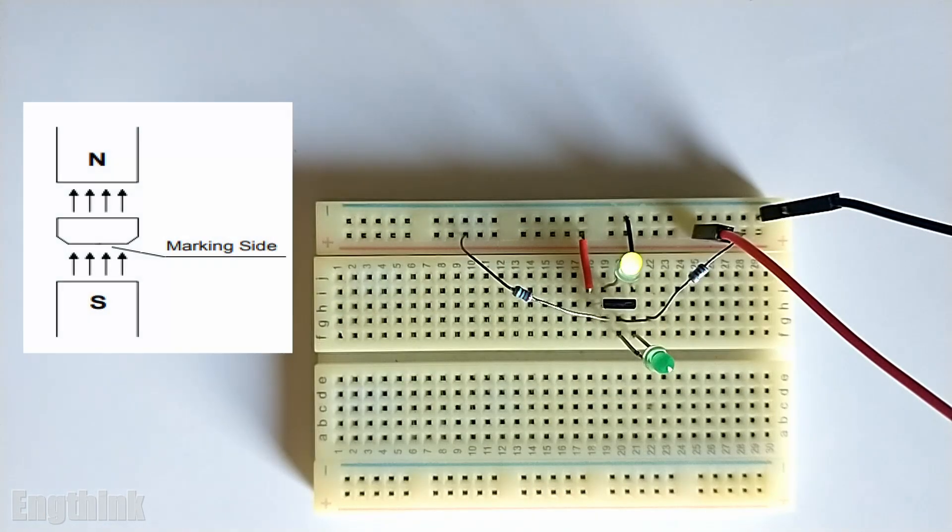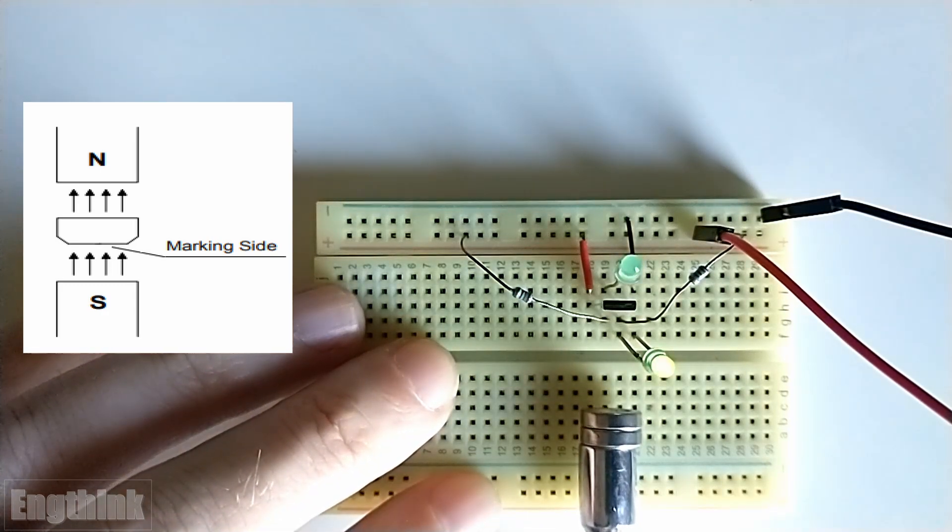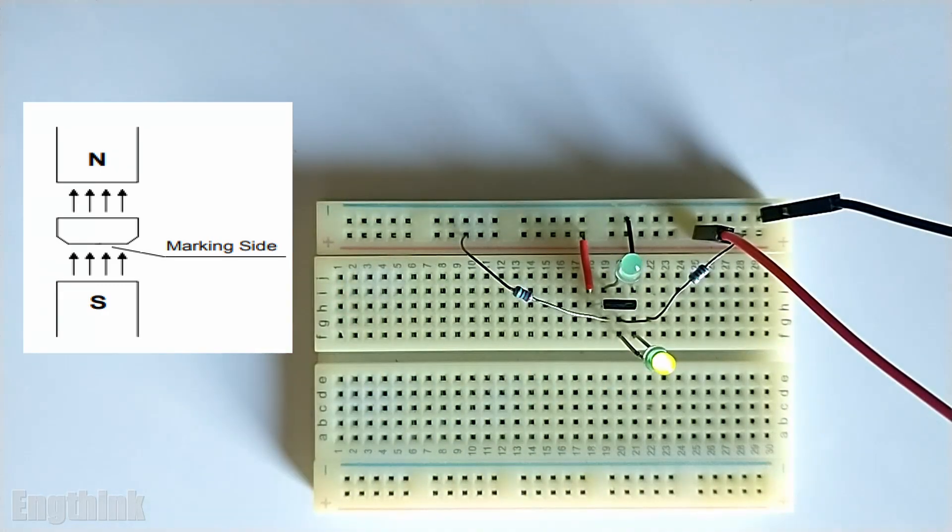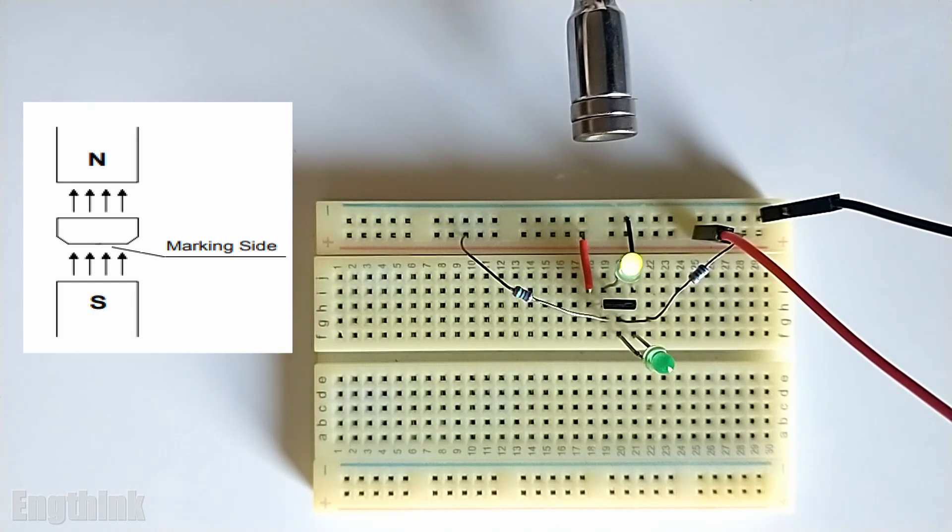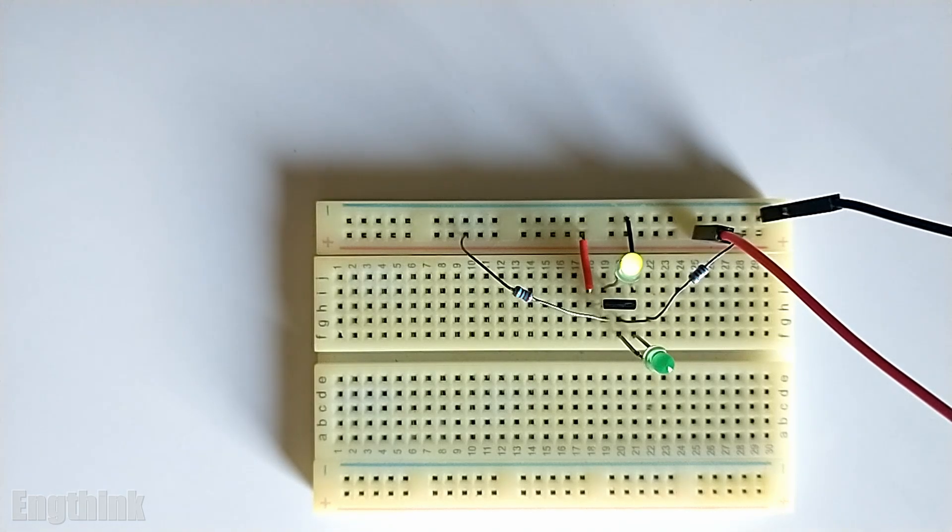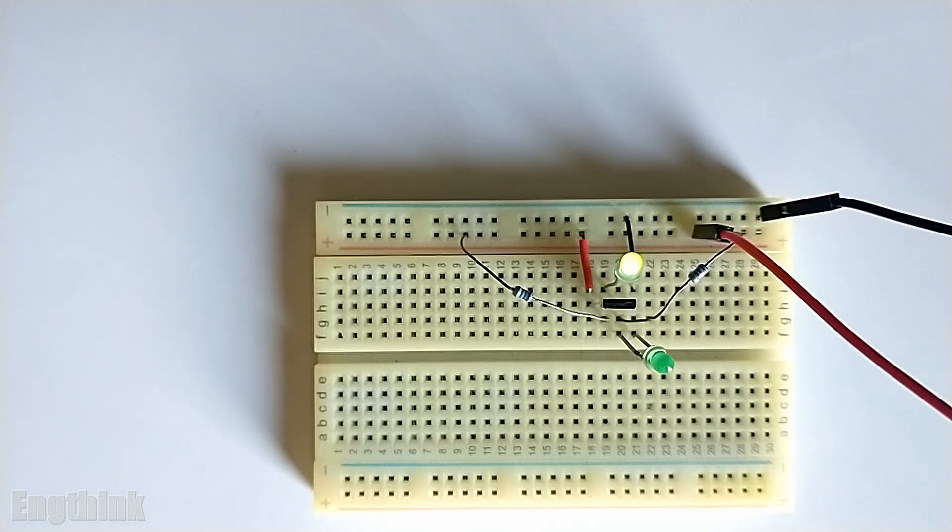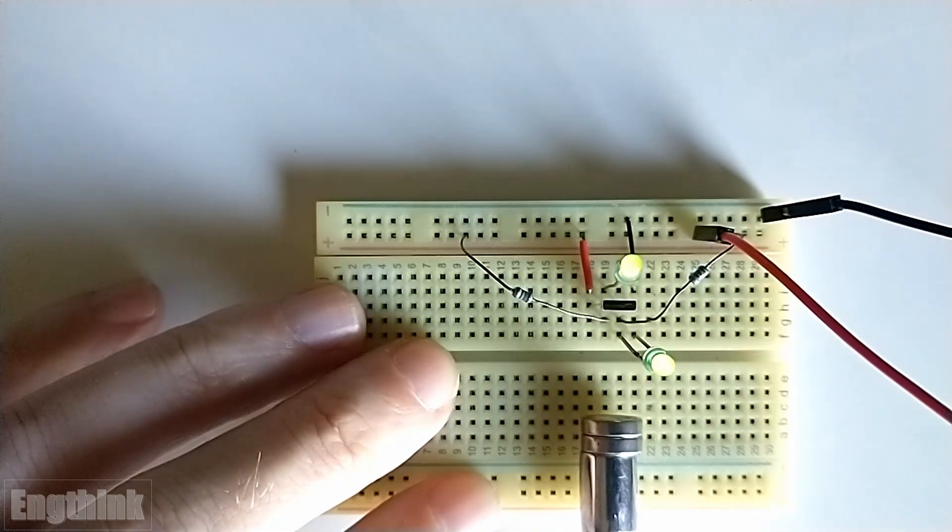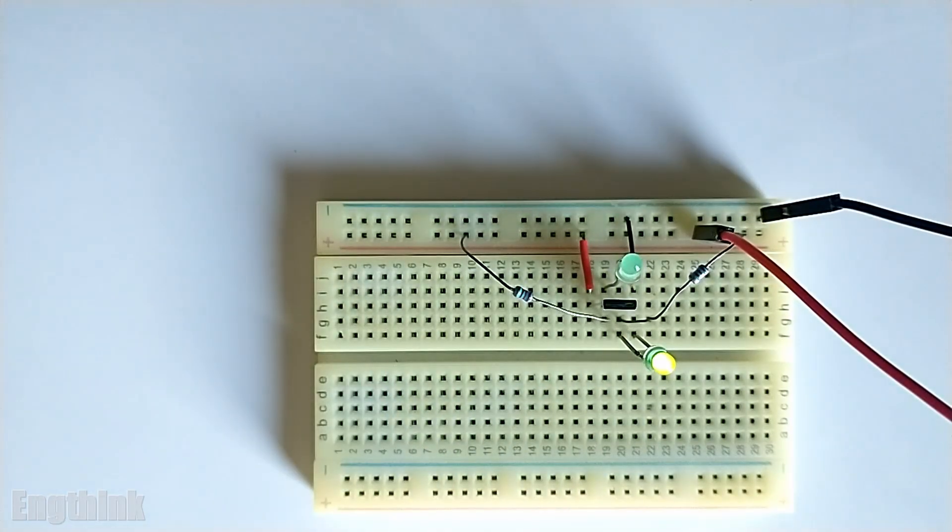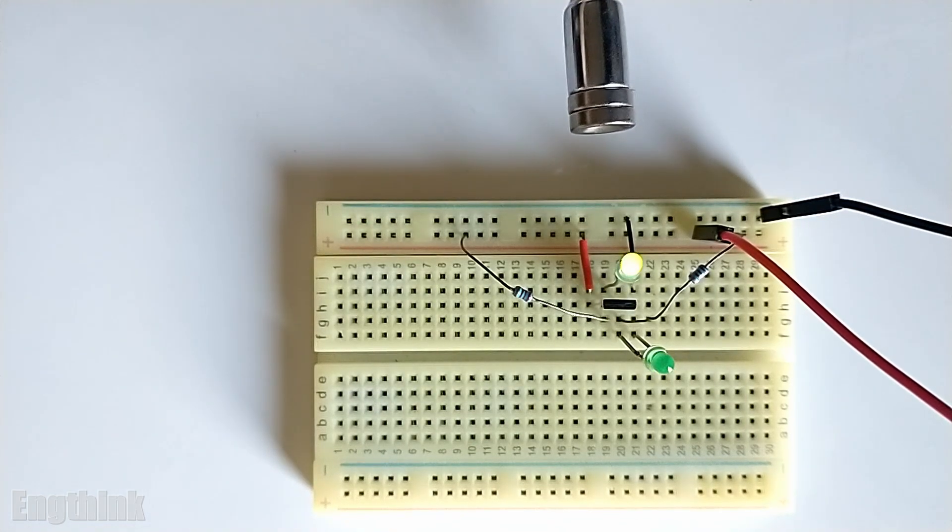Other option that we have to change the state of the output of the Hall effect sensor is approaching the magnet by the back of the sensor, means the opposite of the mark code of the sensor. By this way, we can change the output with the same pole. For example, I'm approaching with the south pole in the front and then we have the transition. And now I will approach with the same south pole to the back so we can see the transition of the outputs through the LED.